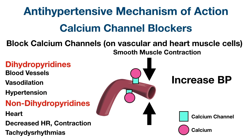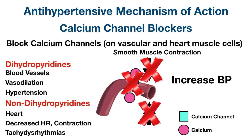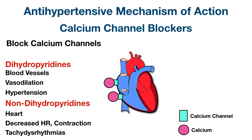If we block calcium channels with calcium channel blockers, we decrease the influx of calcium into smooth muscle cells. This decreases smooth muscle contraction and vasoconstriction, ultimately decreasing blood pressure. The mechanism for non-dihydropyridines is similar, but they block calcium influx into cardiac muscle cells, decreasing heart rate and cardiac contractility.